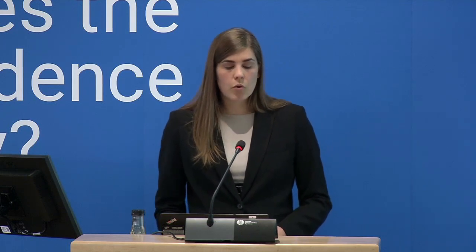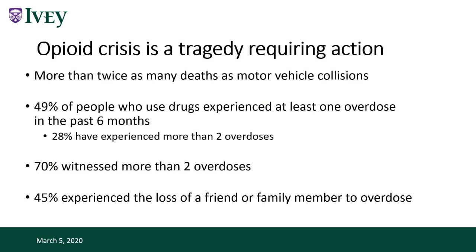The opioid crisis is a tragedy requiring action. There are more than twice as many deaths from the opioid crisis as from motor vehicle collisions. This also has a really high impact on individuals living through it: about 50% of people who use drugs have experienced at least one overdose in the past six months, almost a third have witnessed more than two overdoses, and 45% have experienced the loss of a friend or family member to overdose. There are people on the front lines of this crisis — they're just not in our high schools.